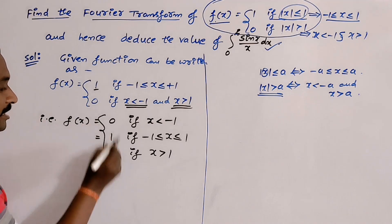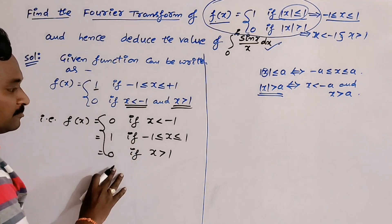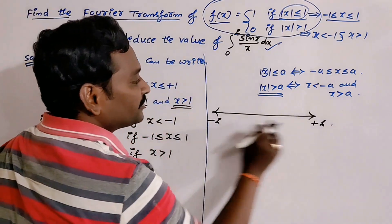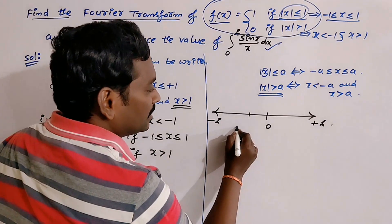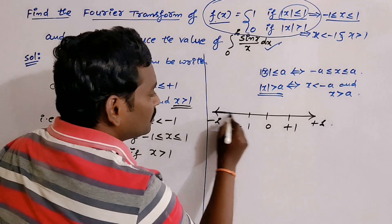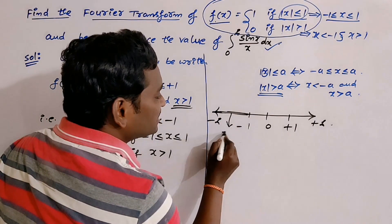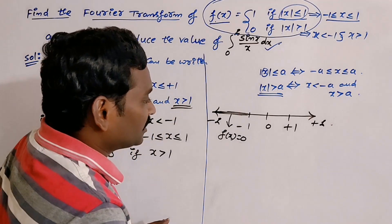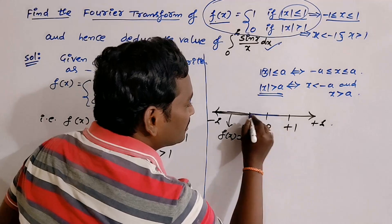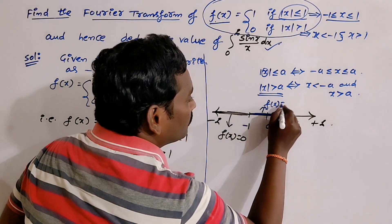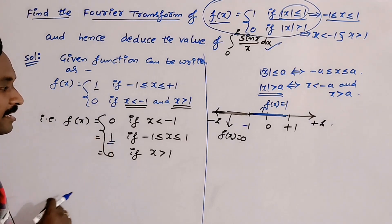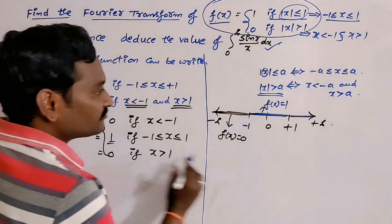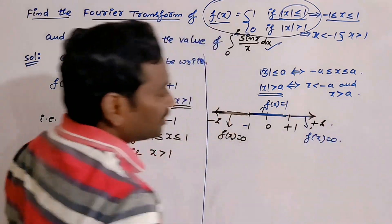I will explain this condition on the real number line, from −∞ to +∞, with midpoint 0, and points −1 and +1 marked. If x < −1 the function is 0. If x is between −1 and +1 the function is 1. After +1, if x > 1, the function is again 0.